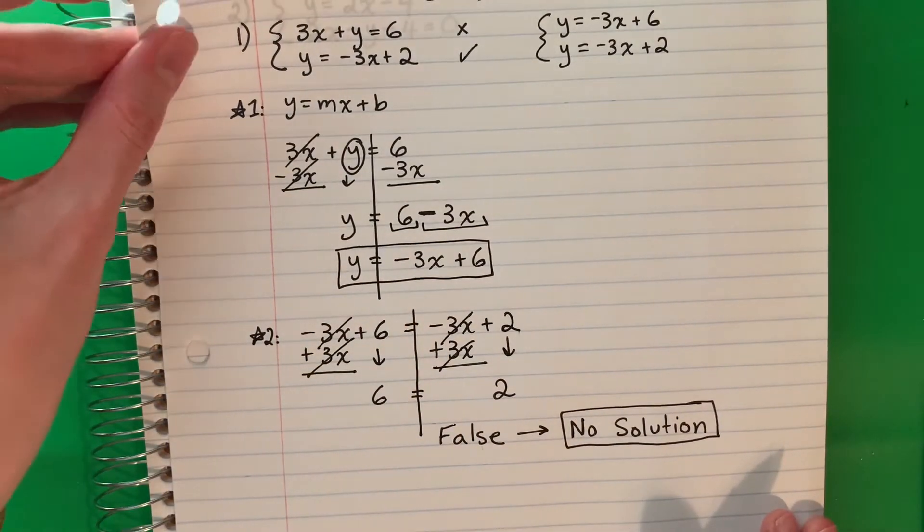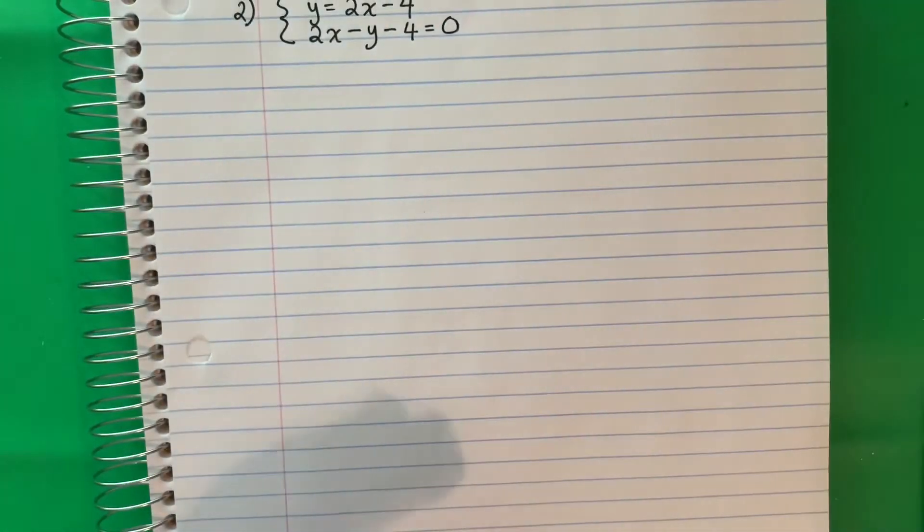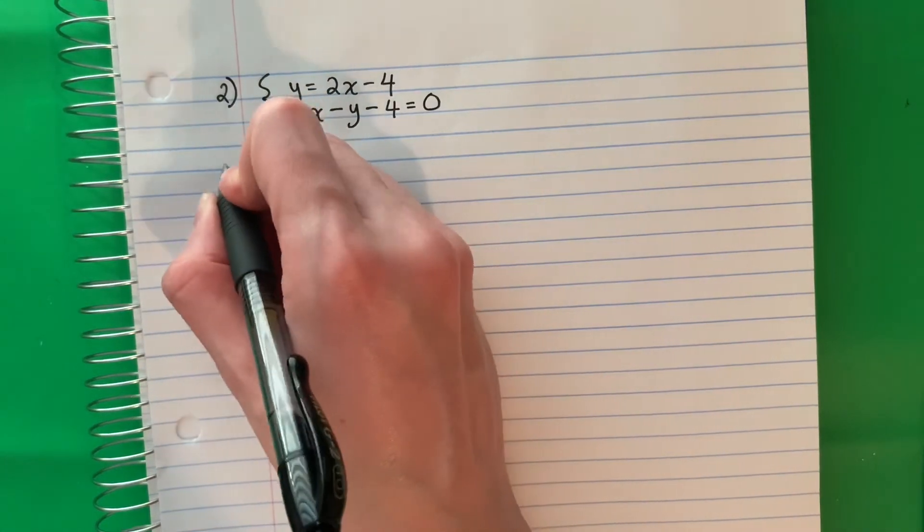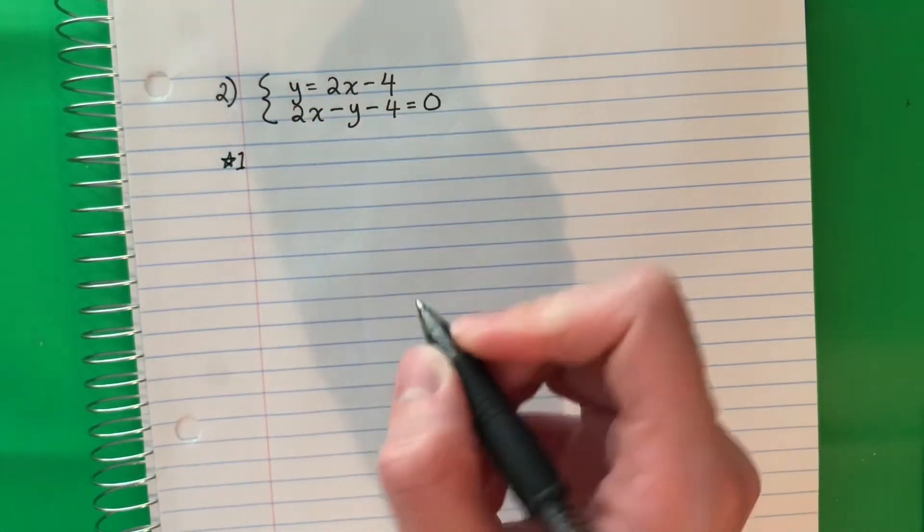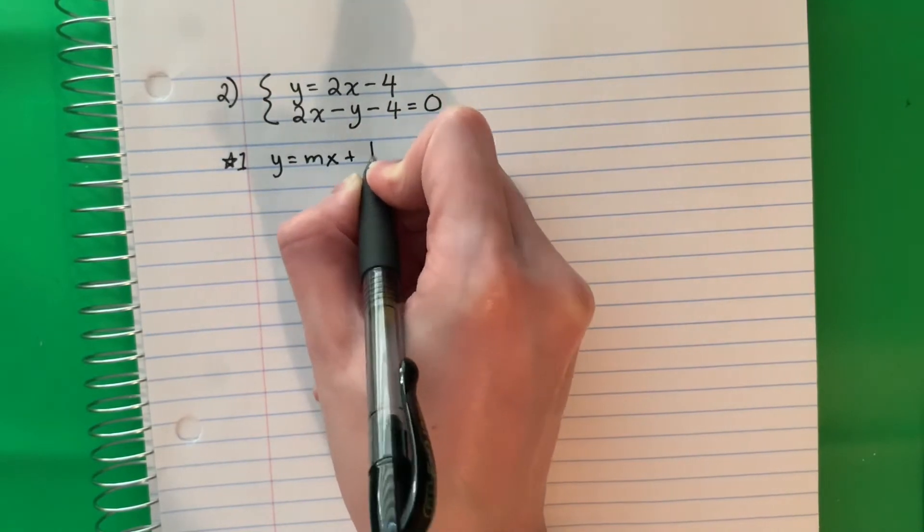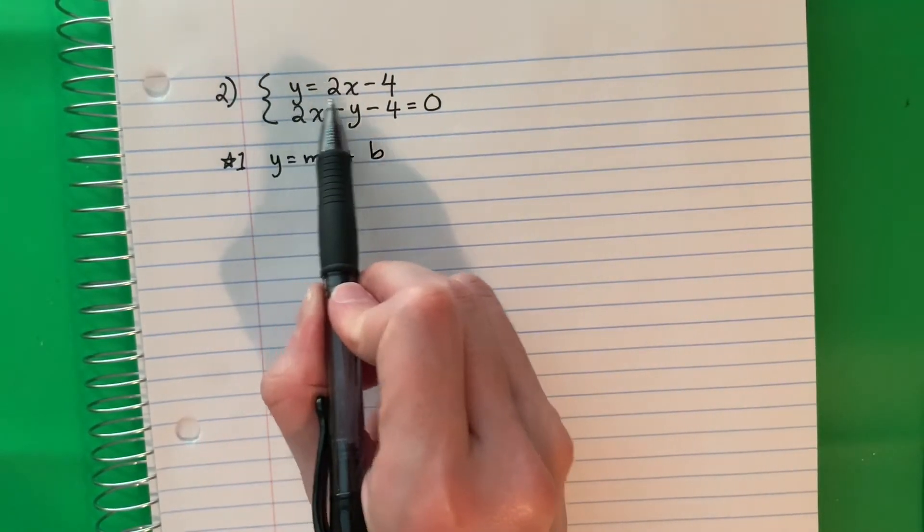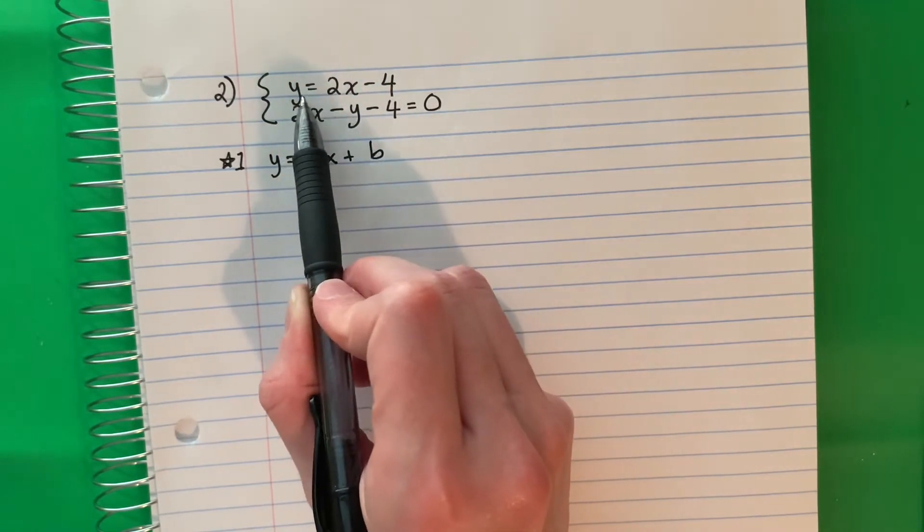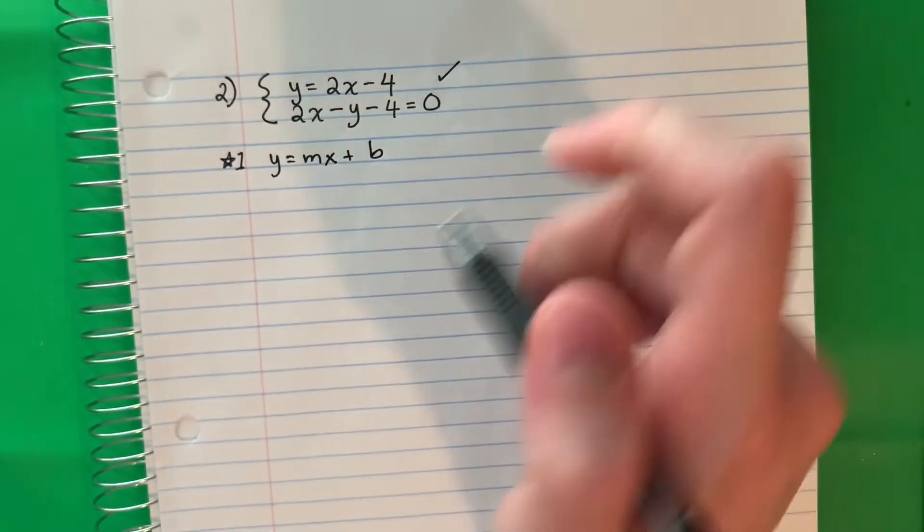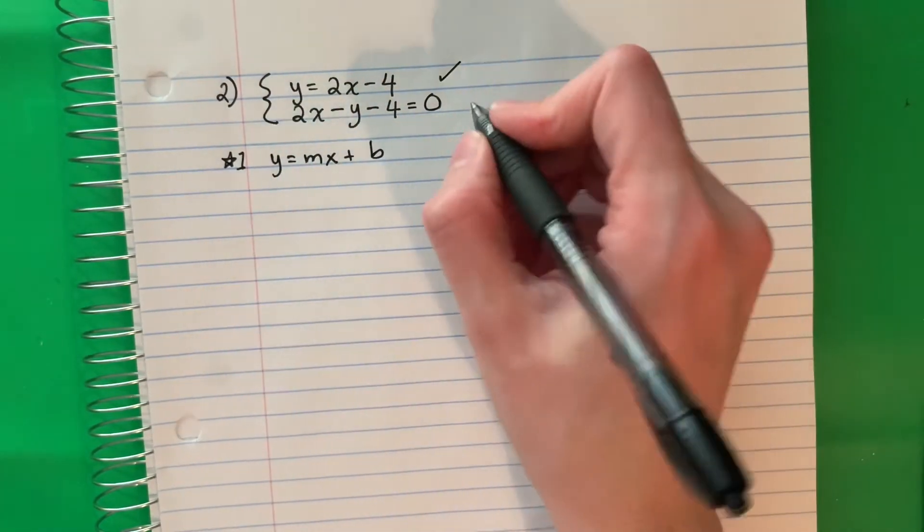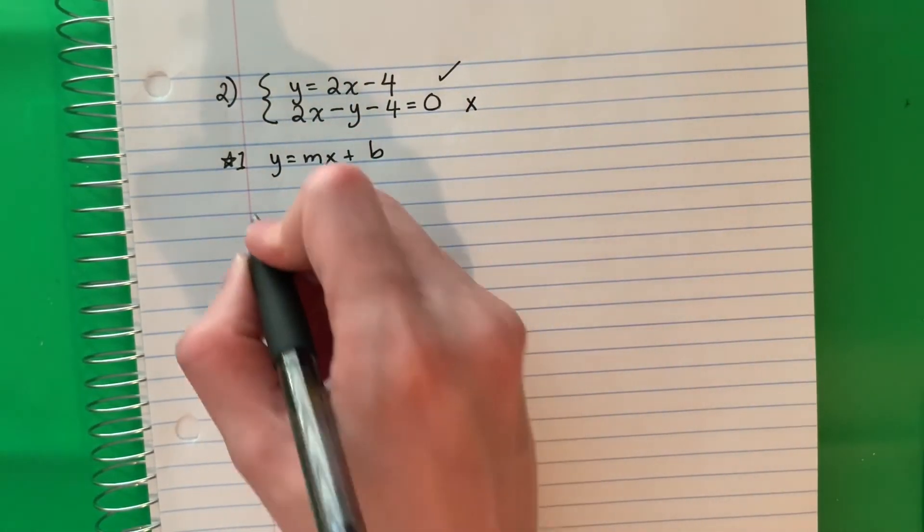Example 2. Same thing. Our first step is we're going to do slope intercept form y equals mx plus b. So here is this in y equals mx plus b form? Yes, the y is alone. What about this one? Is this one in slope intercept form? No, I need to fix it.